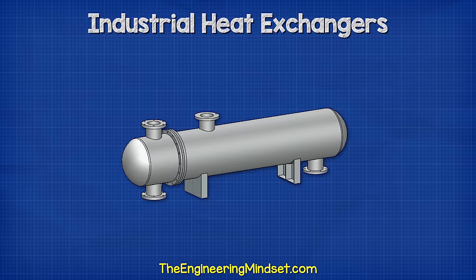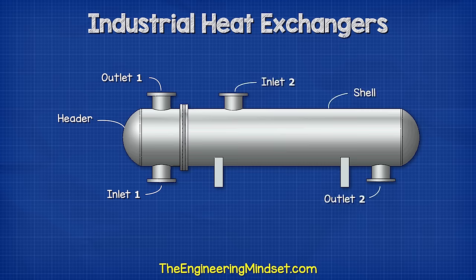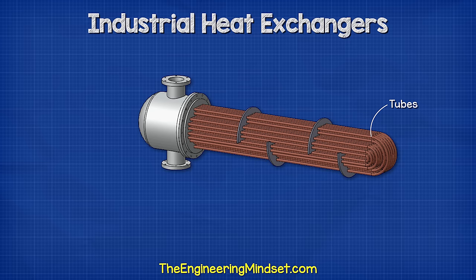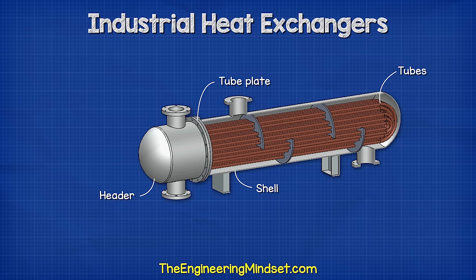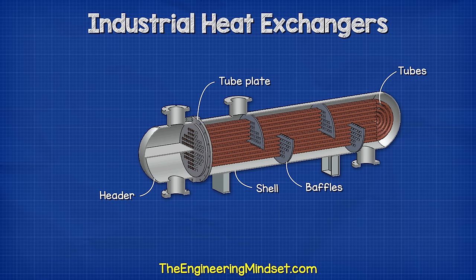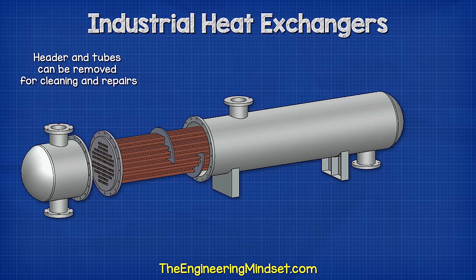Shell and tube heat exchangers look something like this. With this design, we normally find the inlet and outlet for one fluid at the very end of the heat exchanger, known as the header. Then we have another inlet and outlet for the second fluid on the main body, known as the shell. Inside the unit we have the tubes, which bend and loop around to start and finish at the tube plate, which sits between the shell and the header. The tubes usually also pass through baffles, which are sheets of metal. The header and tubes can be removed for cleaning, repairs, and maintenance.